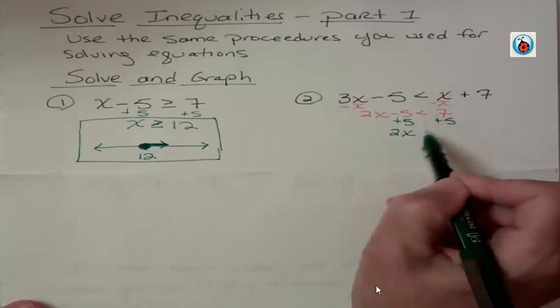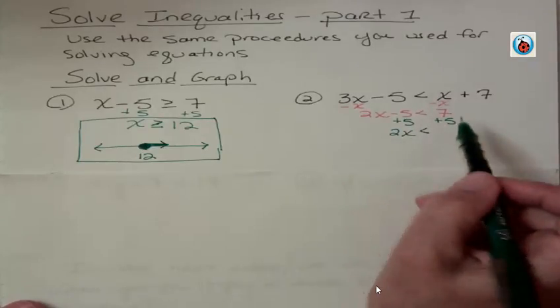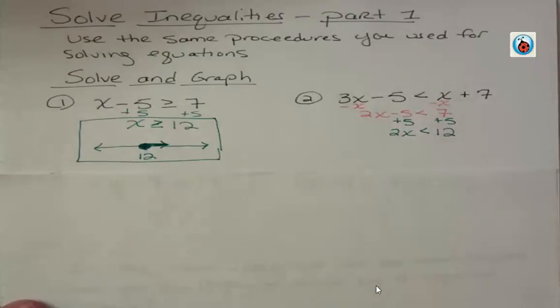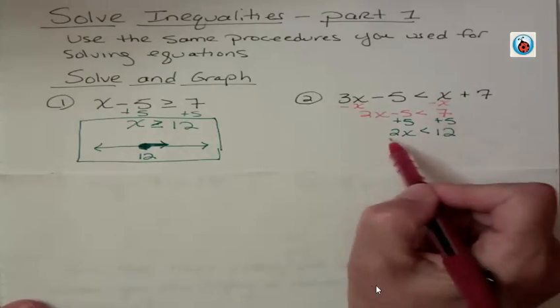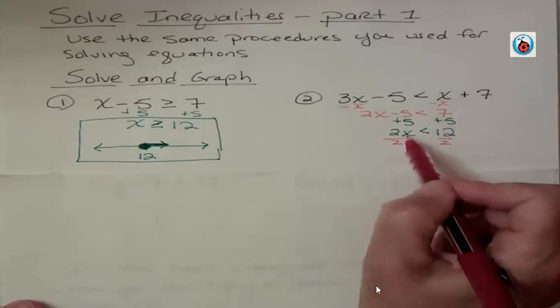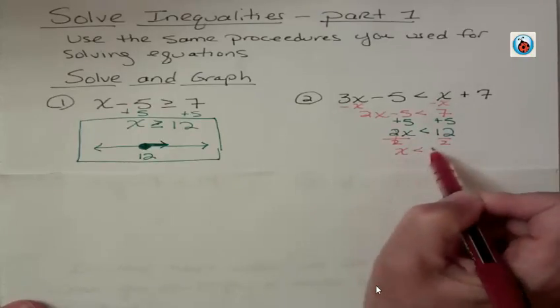Remember, it's less than, not equals. 7 plus 5, which is 12. Finally, just like I would in any other equation, I'm going to get rid of that coefficient by dividing both sides by that. And I get x is less than 6.